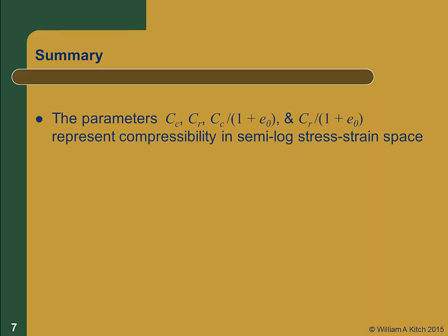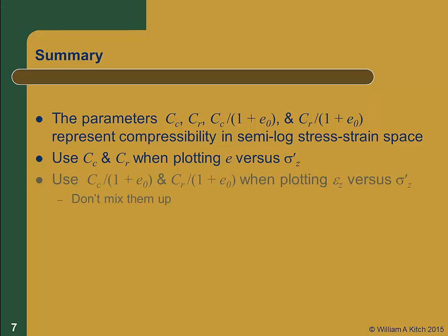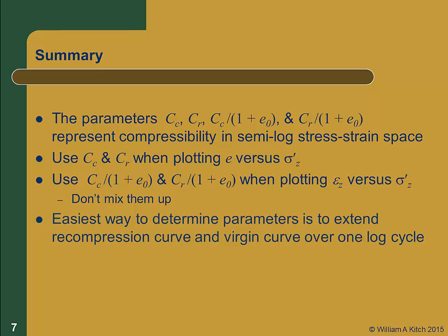That's all there is for this webcast, so let's summarize. We use the parameters C sub c and C sub r, or C sub c over 1 plus E0 and C sub r over 1 plus E0, to represent the compressibility of soil in semi-logarithmic stress-strain space. C sub c and C sub r are used if we plot by void ratio, and C sub c over 1 plus E0 and C sub r over 1 plus E0 are used if we plot by vertical strain — don't mix the two up or your answers will be wrong. We can make our job easier by picking points from the curves that are one log cycle apart, since the log of 10 equals 1, and the number 1 is our friend.